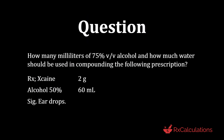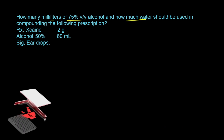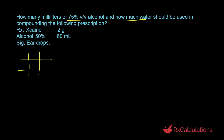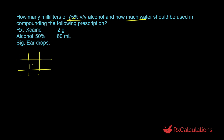This question says: how many milliliters of 75% volume by volume alcohol and how much water should be used in compounding the following prescription? Egg skin 2 grams, alcohol 50% 60 milliliters, ear drops. The goal is to calculate the volume of 75% v/v alcohol and the volume of water. The smartest approach is the alligation method. We set up the alligation grid: top left corner is the higher strength, 75%; bottom left is water at 0%; and in the middle is the desired concentration, 50%.